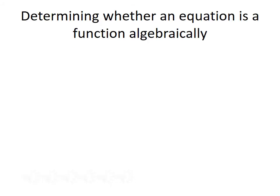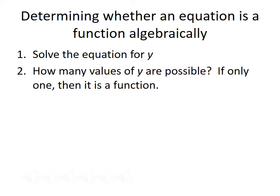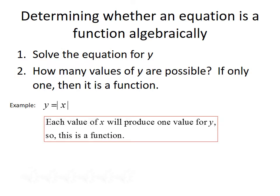So far, all of our examples have had lists of items or numbers. We won't always be given a list — sometimes we just need to look at an equation. To determine whether an equation is a function, the first thing you want to do is solve your equation for y and then determine how many values of y are possible. If it's only one value that's possible, then it is going to be a function; but if you can have multiple values, it would not be a function. For example, y equals the absolute value of x. We've already solved for y, so since each value of x produces only one value for y, this is a function.